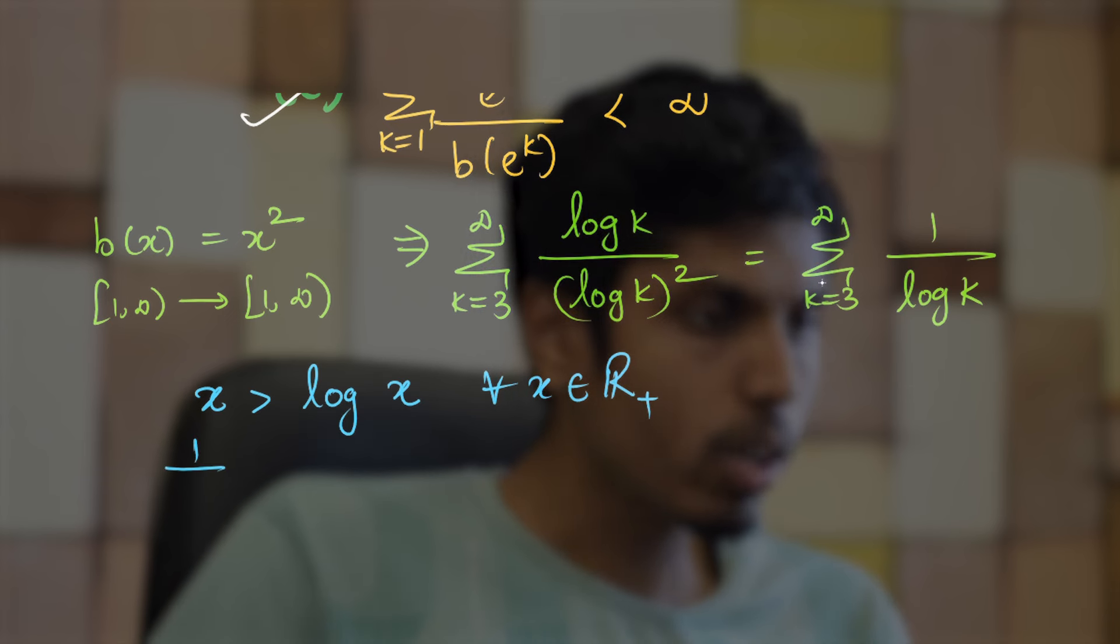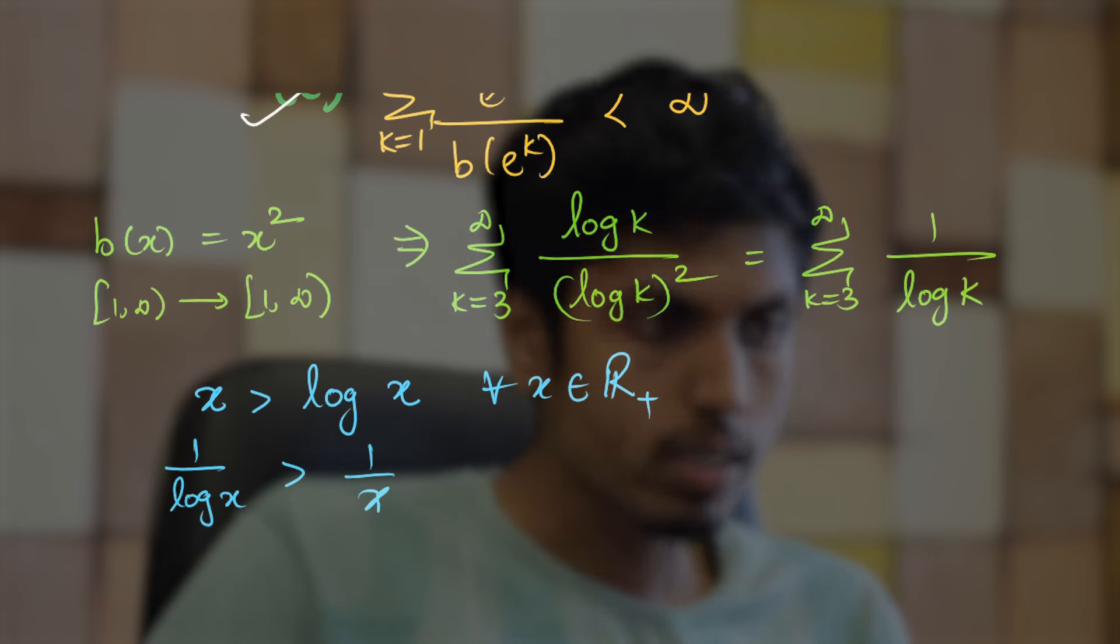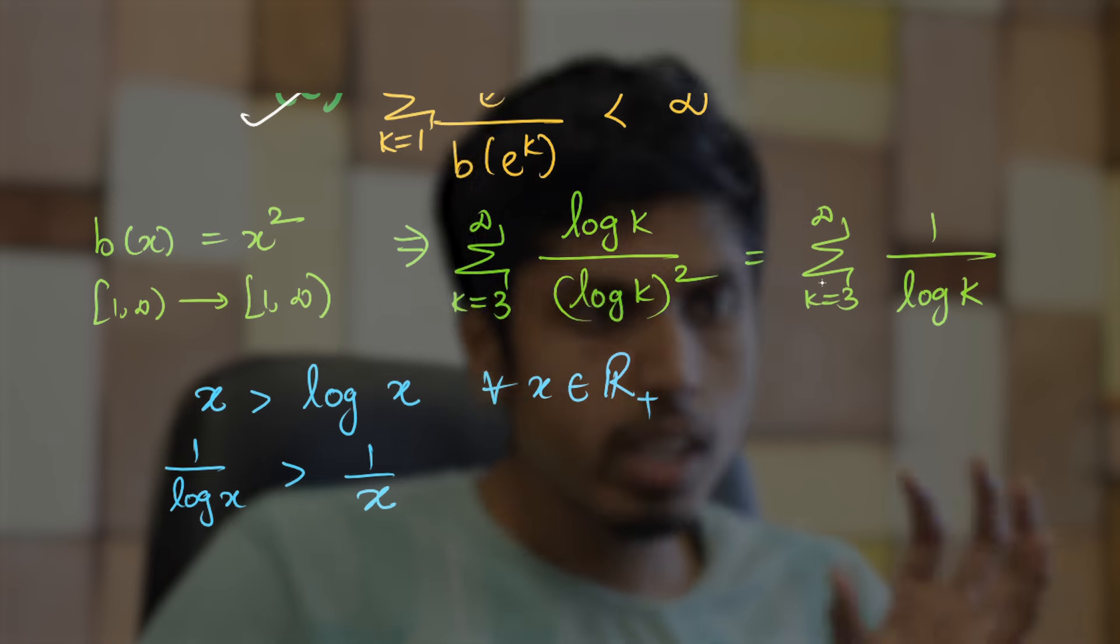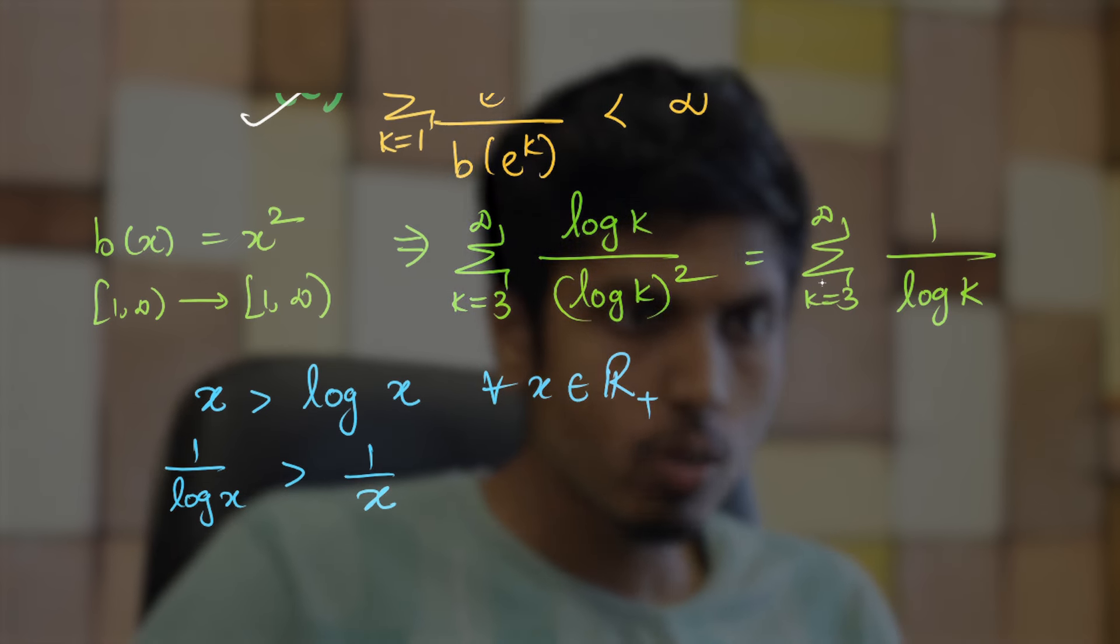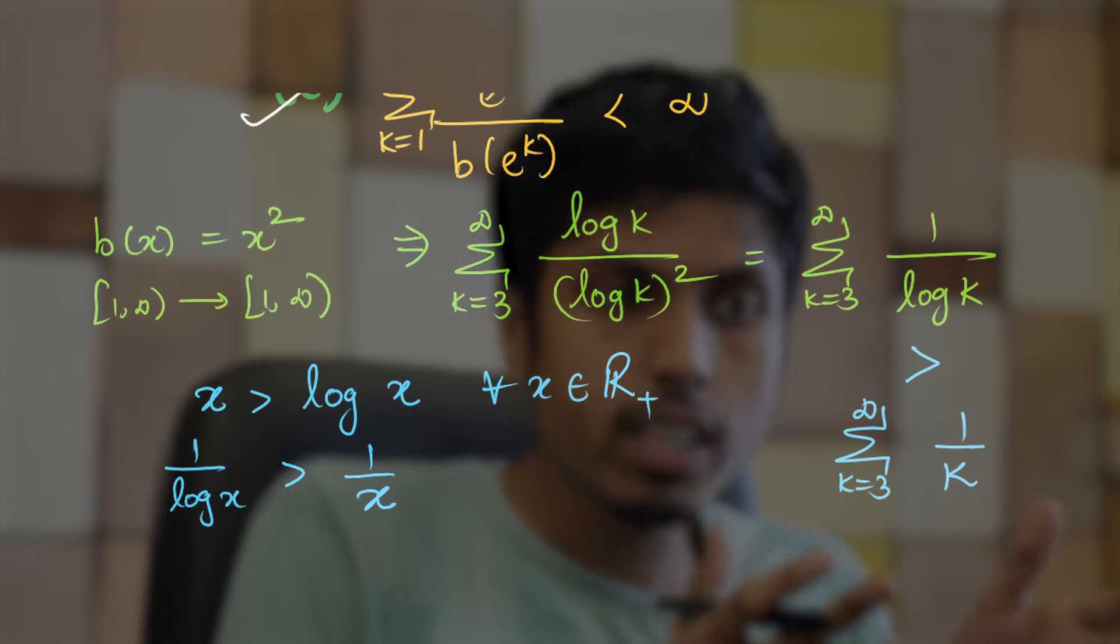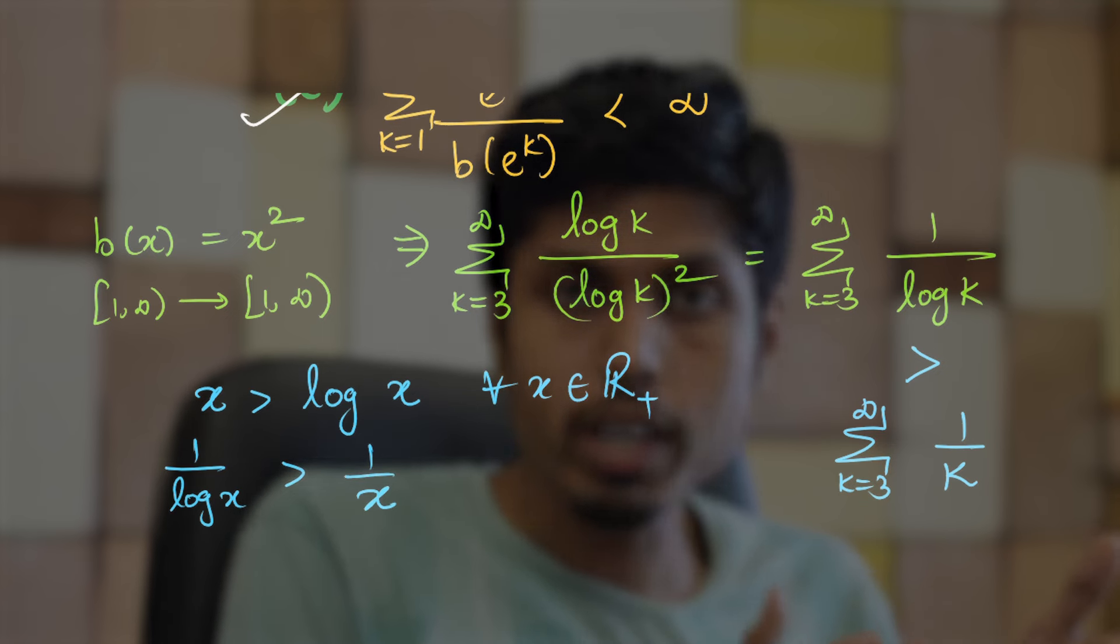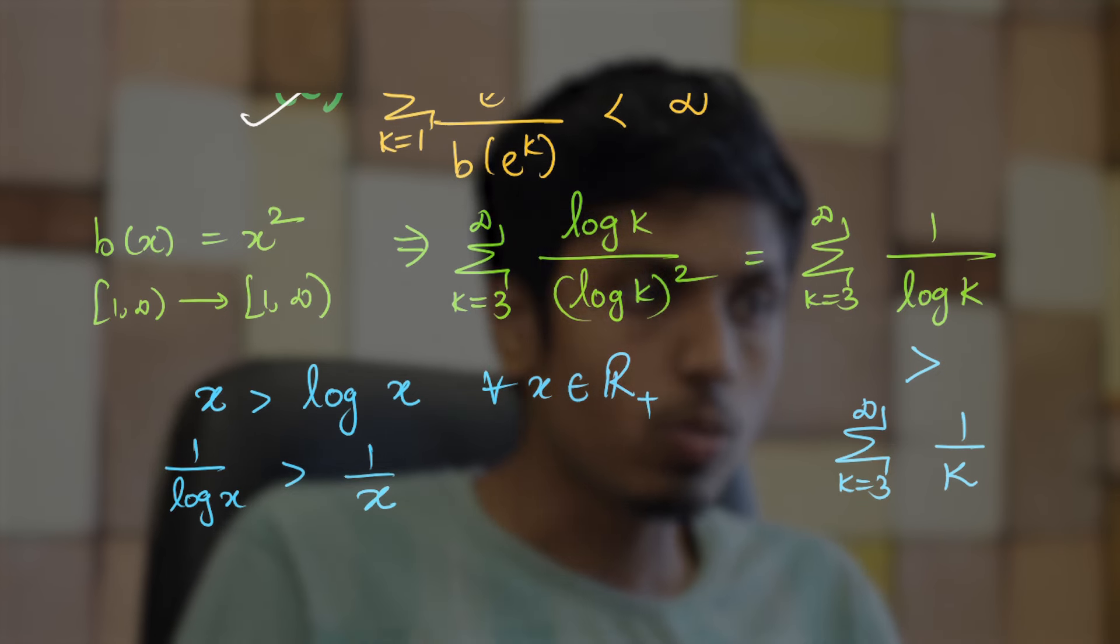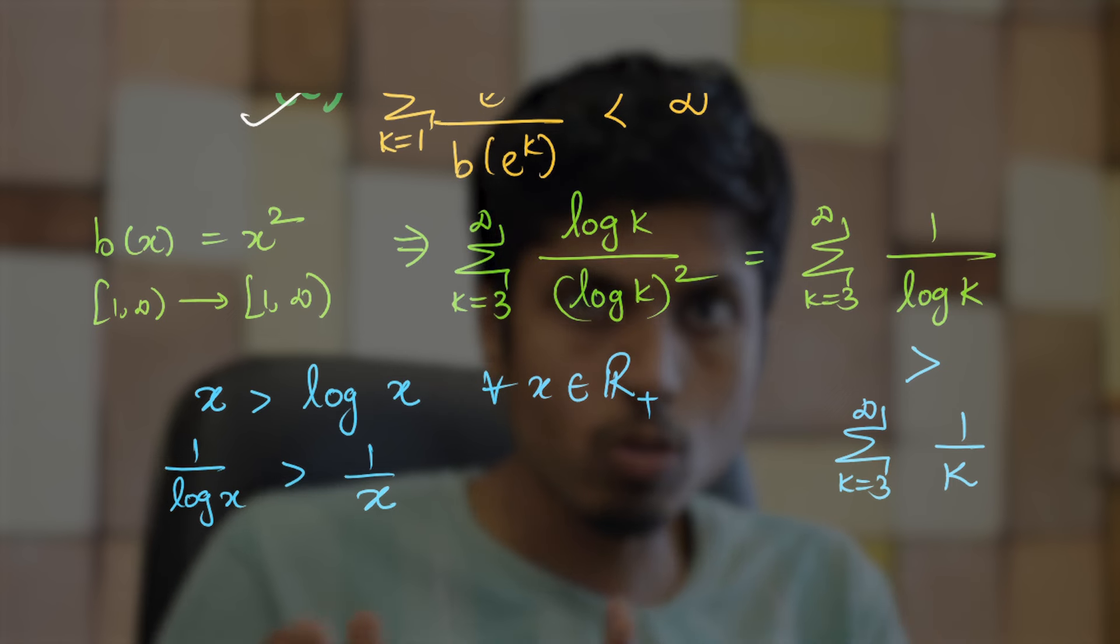That means 1/log x is greater than 1/x and you can impose this inequality or constraint for option B to get summation 1/log k to be greater than summation 1/k. But we know that summation 1/k diverges. It is popularly known as the harmonic series. So, it diverges which means a series that is greater than 1/k will also diverge. So, clearly it's not less than infinity and does not converge.